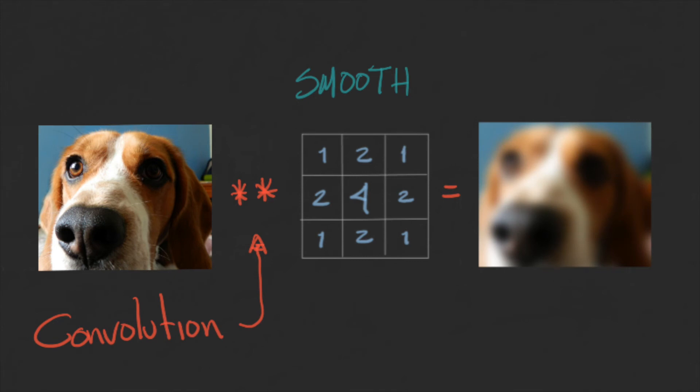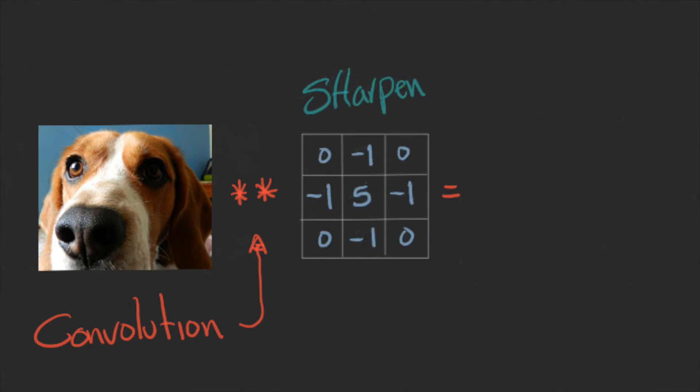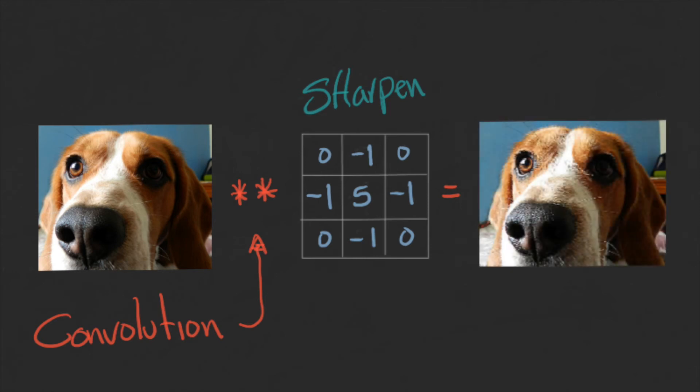But we can also create a kernel that makes the opposite. If we change the weights of the neighbor pixels, instead of smoothing the image, we will make it sharper. This kernel is accentuating the differences in the image.